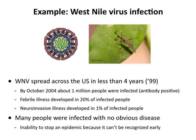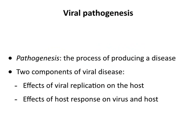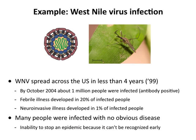Ebola virus infections also have a certain percentage that are inapparent. We don't actually know the number, but serological surveys of remote villages in Africa find people who are seropositive — who have antibodies against Ebola virus — but have never been ill. They would have known if they'd had Ebola hemorrhagic fever. So even with a virus that has captured everyone's attention because it's so lethal, there are inapparent infections as well.